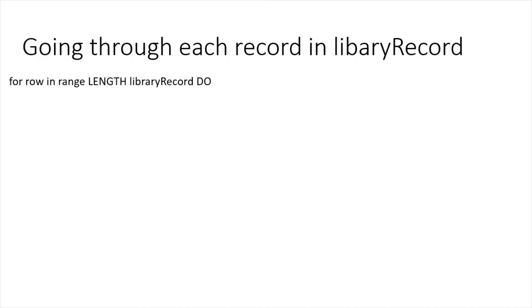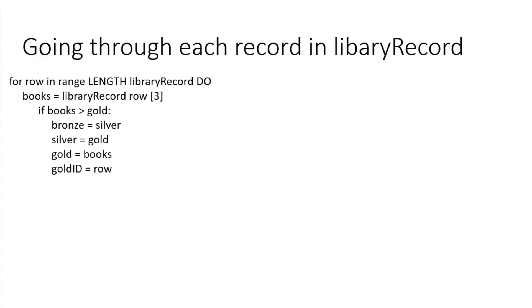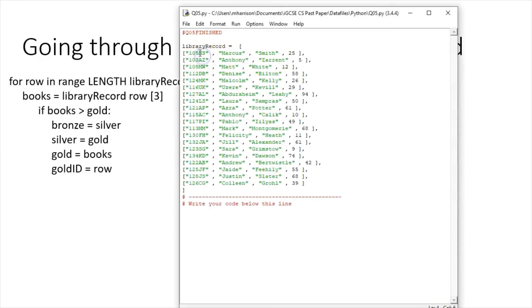Then I need to go through each record in turn in the library record. I'm going to use a for loop: for row in range length of library record, do. For each row in the whole library record, do the following. Books equals library record row three — meaning element three of that row, which is the number of books that pupil has read.